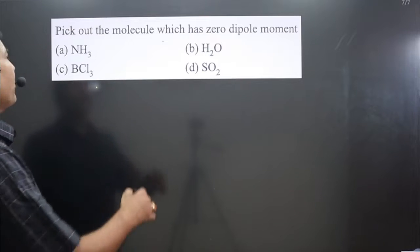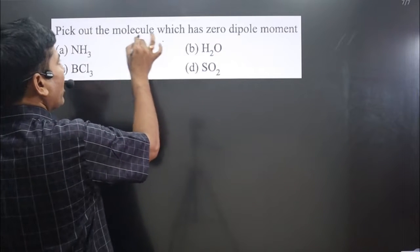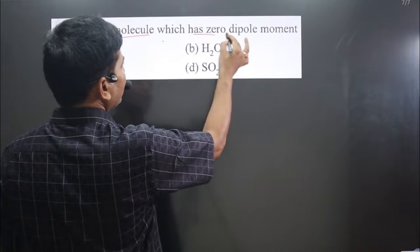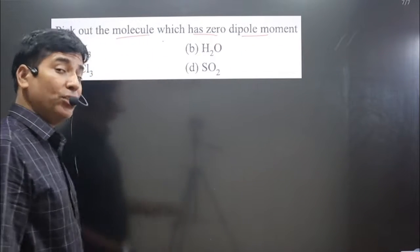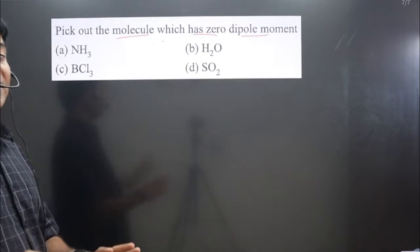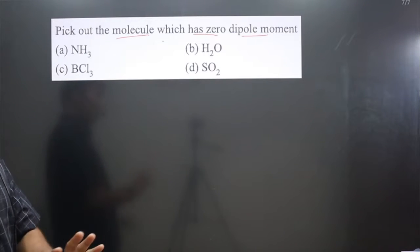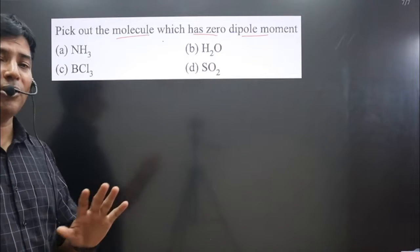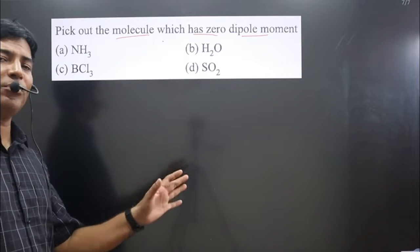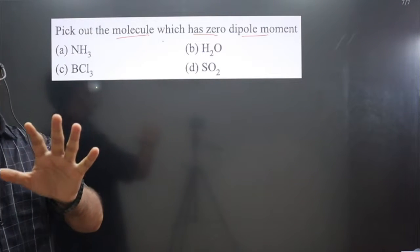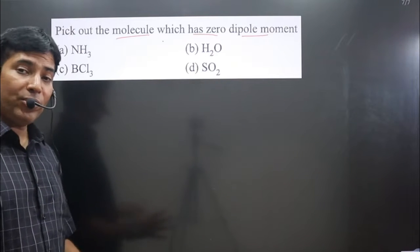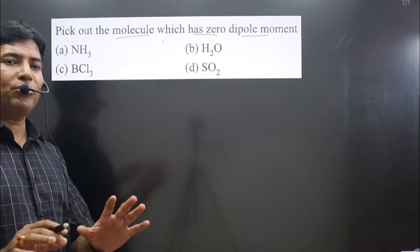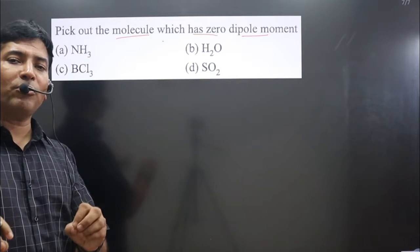The question says: pick out the molecule which has zero dipole moment. Zero dipole moment means it is nonpolar by nature. The question is asking which molecule is nonpolar by nature, and molecules are given. By using geometry, we can also determine polarity — whether a molecule is polar or nonpolar by nature.